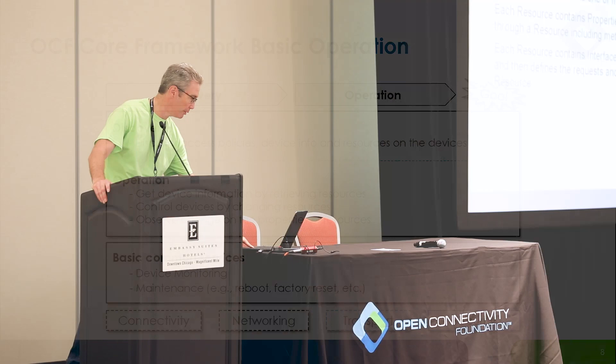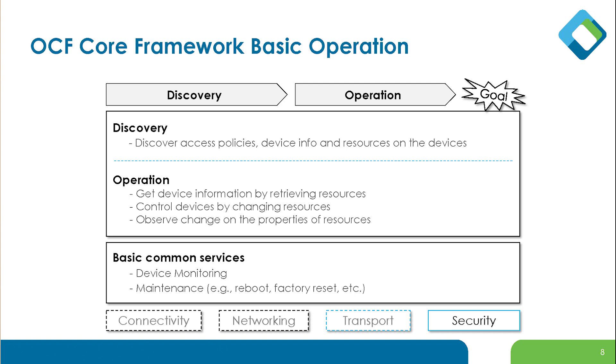Basic operation is how you interact with what's in the framework. You discover stuff — discovery is what we build on. It's multicast: you find things, you go 'I found you, what do you have?' and it tells you. Then you interact: retrieving information, updating information, observing information. If you only care when temperature changes, you can sit there waiting — you don't have to keep polling 'have you changed yet?' It's a classic observer pattern, pretty familiar patterns if you've done REST at all.